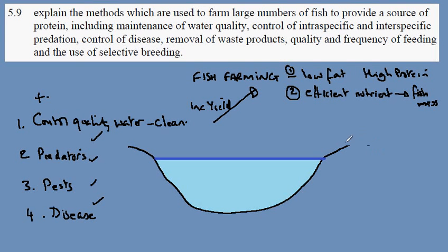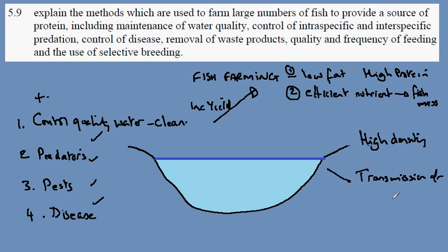However, where you have a high density of fish, the possibility exists for the transmission of disease. Because of this, some fish farmers have taken to using antibiotics. This is of concern to human health.